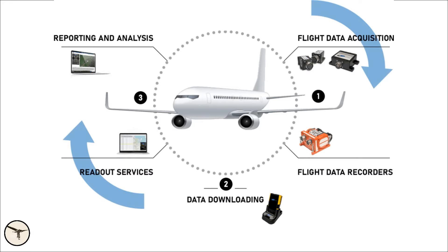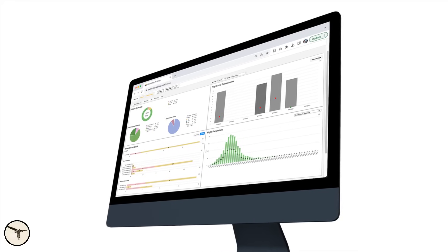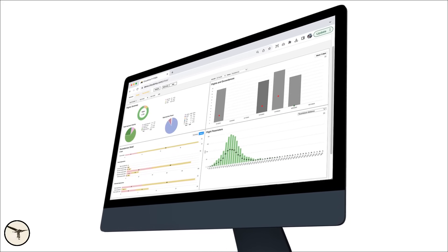In practice, an FDM program involves the following: continuously recording flight parameters throughout the flight; routinely collecting this data from aircraft; using specialized software to analyze the recordings and extract safety critical information, such as deviation from operating procedures or abnormal parameter values. These parameters include deviations in airspeed, flight path configuration, and more.